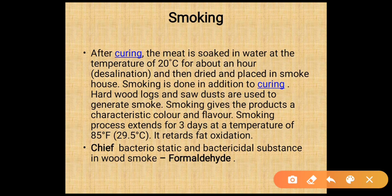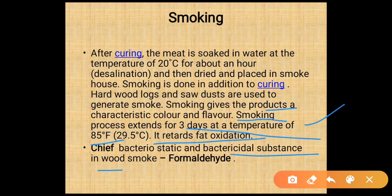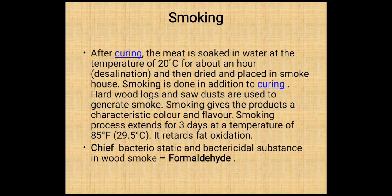Permissible limit of nitrite is about 200 ppm and of nitrate is about 500 ppm. Nitrates and nitrites are responsible for the characteristic flavor and pink coloration of cured meat. The pink color of cured meat is due to nitrosohaemochrome. After curing, the meat is smoked at about 20 degrees Celsius for about an hour, then desalted, dried, and placed in a smokehouse. Hardwood logs and sawdust are used to generate smoke. The chief bacteriostatic and bacteriocidal substance in wood smoke is formaldehyde.